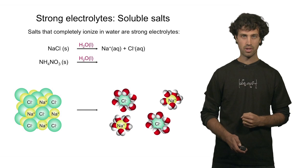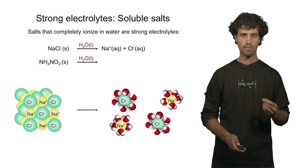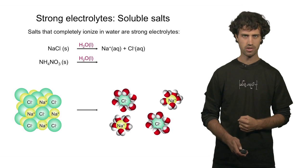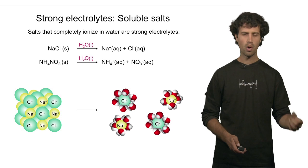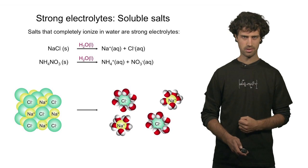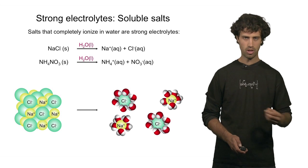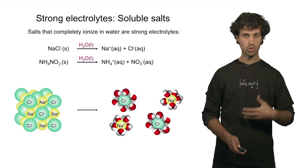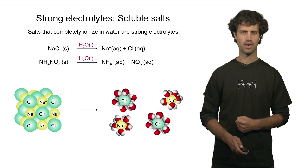Another example is ammonium nitrate. Like sodium chloride, ammonium nitrate fully dissolves when brought into contact with water, in this case producing ammonium ions and nitrate ions. Salts like sodium chloride and ammonium nitrate fully dissolve in water, produce a lot of ions, and therefore are strong electrolytes.